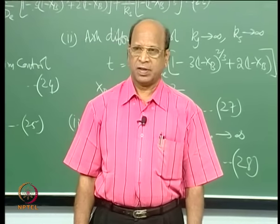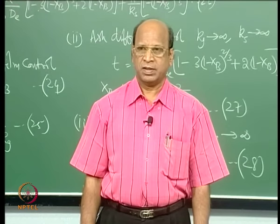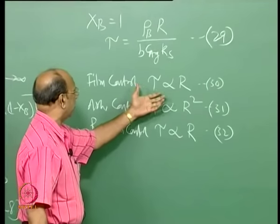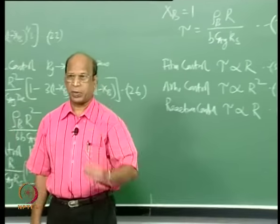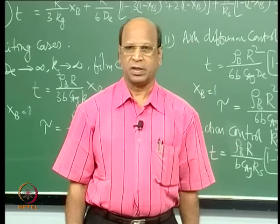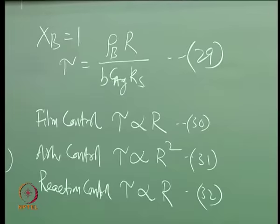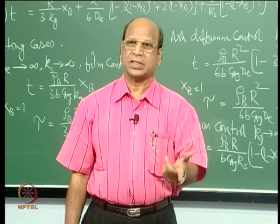The meaning of these equations is that I can take particles of 1 mm, 5 mm, 10 mm, and 20 mm — four particles. I find out the total time required for complete conversion. For each particle size I record the time for complete conversion, though finding this experimentally is not trivially easy.